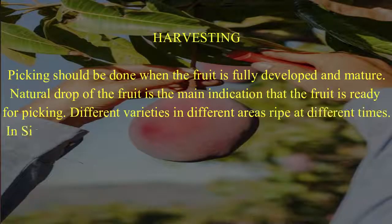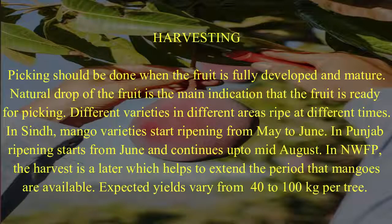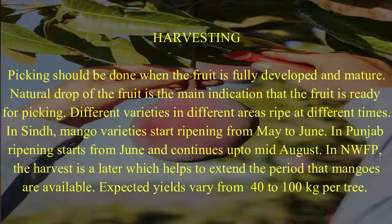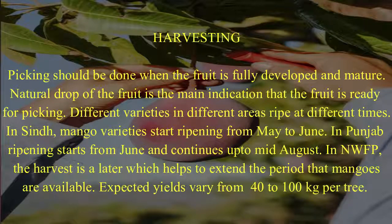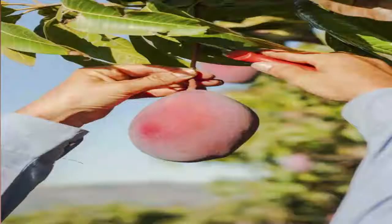Picking should be done when the fruit is fully developed and mature. A natural drop of the fruit is the main indication that it is ready for picking. Different varieties in different areas ripen at different times. In Sindh, mango varieties start ripening from May to June. In Punjab, ripening starts from June and continues up to mid-August. In NWFP, the harvest is later, which helps extend the period that mangoes are available. Expected yields vary from 40 to 100 kg per tree.